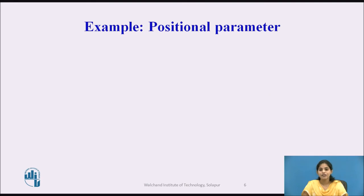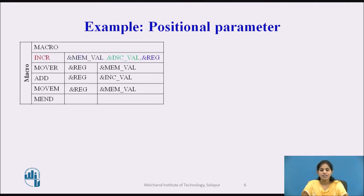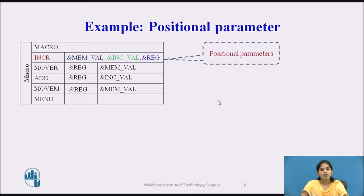Next we see an example of positional parameters. This is the definition of the macro; the name of the macro is INCR. It has three positional parameters: &MEMORY_VAL, &INC_VAL, and &REGISTER. These are the three positional parameters for the macro INCR.